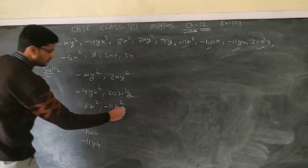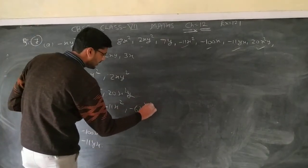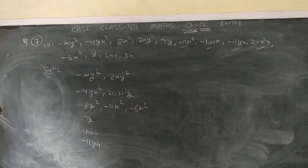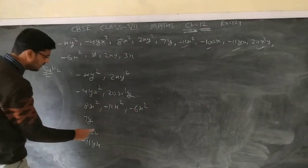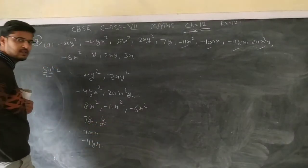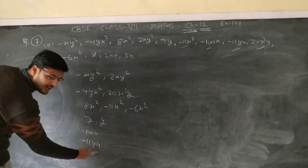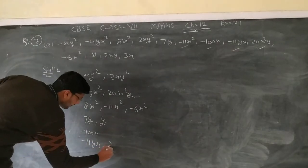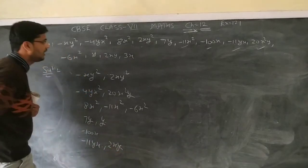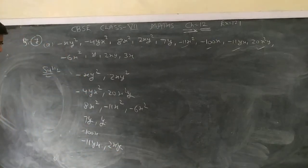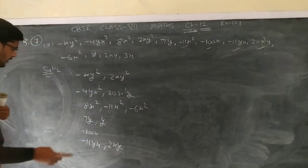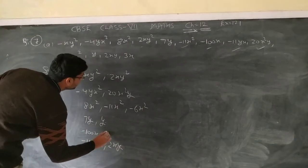Now y, 7y is like that, it is y. Now next one is 2xy, xy is like that. And next one is 3x, so x is here minus 100x, it is 3. So it is the pair of like terms, this is the like term.